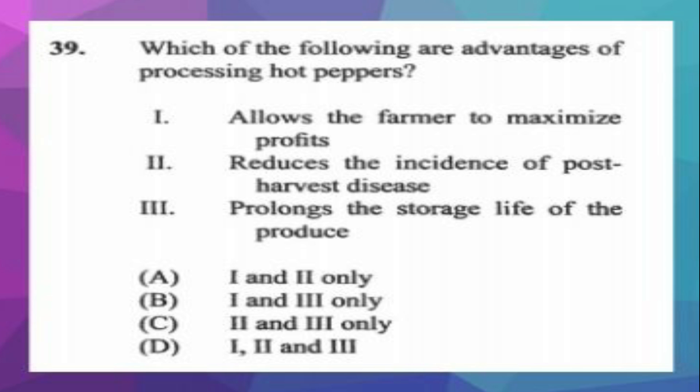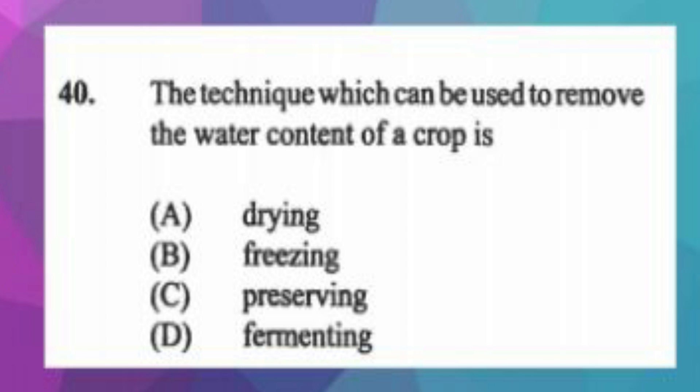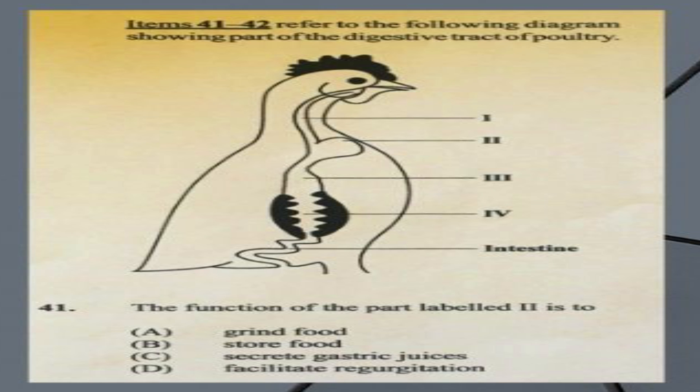Question number thirty-nine: which of the following are advantages of processing peppers? One: allows the farmer to maximize profits. Two: reduces the incidence of post-harvest diseases. Three: prolongs the storage life of the produce. A) one and two only, B) one and three only, C) two and three only, D) one, two, and three. The answer is D, one, two, and three. Question number forty: the technique used to remove water content from a crop is A) drying. The answer is A, drying.